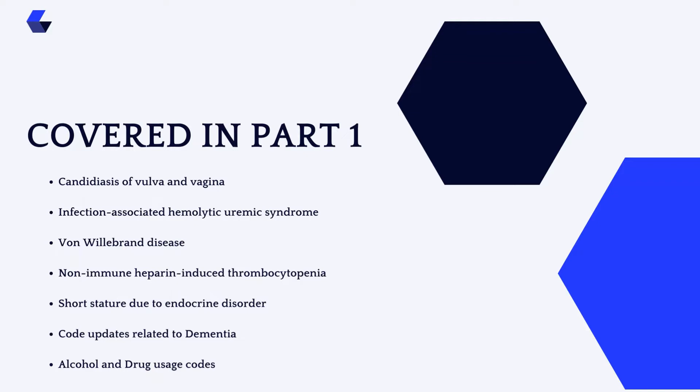In the previous session, we covered updates for categories of codes related to candidiasis of the vulva and vagina, infection-associated hemolytic uremic syndrome, von Willebrand disease, non-immune heparin-induced thrombocytopenia, short stature due to endocrine disorder, and code updates related to dementia and alcohol and drug usage codes.